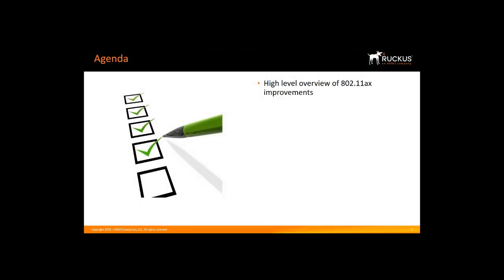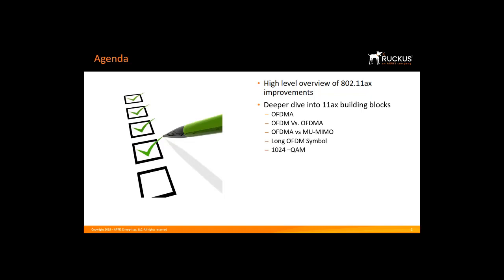We'll start out with a very high-level overview of the building blocks of 11ax, then drill down deeper into each building block. This will include a discussion on OFDMA, OFDM vs. OFDMA, OFDMA vs. Multi-User MIMO, Long OFDM Symbol, 1024 QAM, BSS Coloring, Target Wake Time, IEEE, Wi-Fi Alliance and Commercial Activities, and we'll finish up by talking about some use cases.